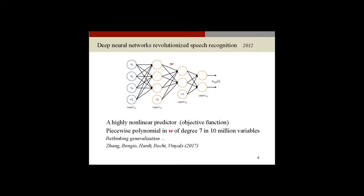Deep neural networks have revolutionized speech recognition, with the first results starting in 2012. In a matter of five years, the whole field has changed drastically. The essence is that you create a very highly nonlinear predictor function — contrary to what was being done in statistics, which preferred simpler models like generalized linear models. Suddenly, the idea is to use a highly nonlinear predictor. Every one of these units is a logistic unit, and you combine them over and over in a composition.